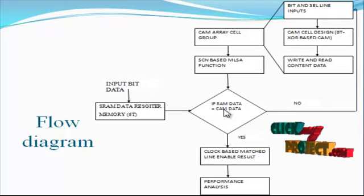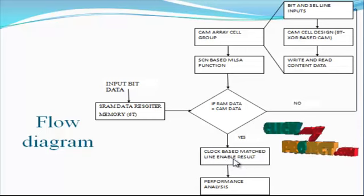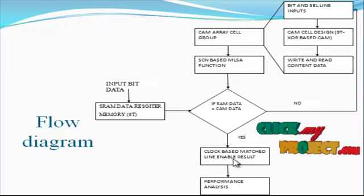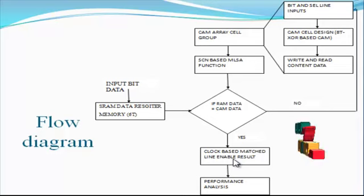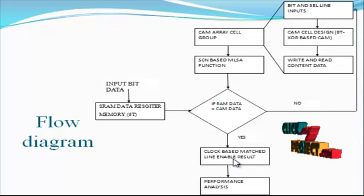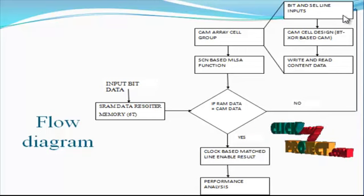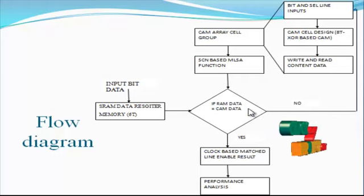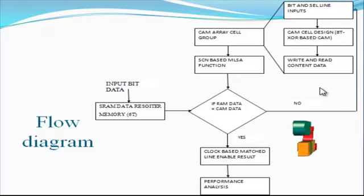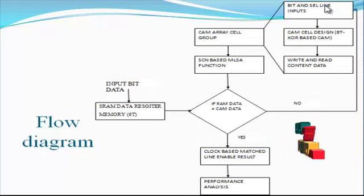If they are equal, it proceeds to the clock-based function and match line enabling detection results. This enabling function controls the clocking sequence for the overall architecture. Then it analyzes the clocking sequence based match line detection. If the match line is correct, it goes to the performance analysis, which identifies the power and overall circuit processing. If not, it goes to another register selection line process. This is the overall flow process for CAM cell array design and the input data register match line selection process, based on a sparse clustered network.